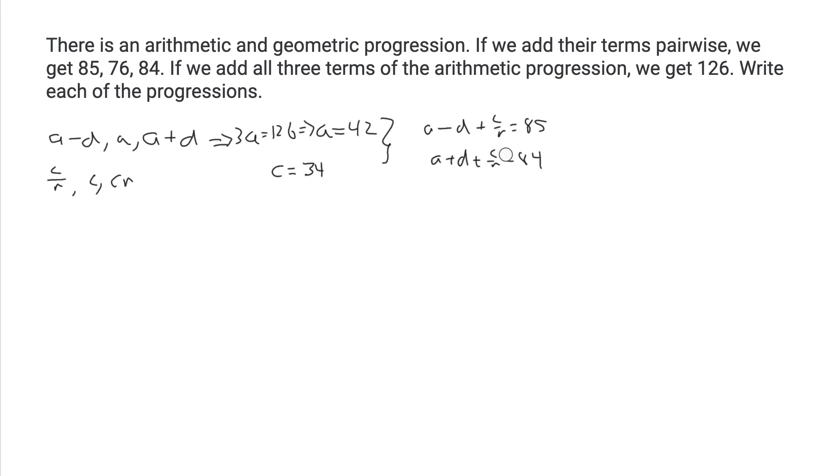Let me just check how I got that right. It should be cr. This is the third term. We recall that we derived a is 42 and c is 34.